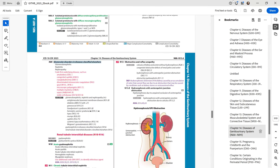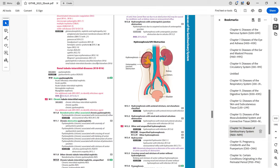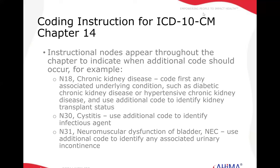You'll see some other important notes here. Code first the underlying disease under N08. And then under N10, with acute polynephritis, you're advised to use an additional code to identify the infectious microorganism. With chronic kidney disease, we need to code first any associated underlying condition, and we use an additional code to identify the kidney transplant status if there is one.